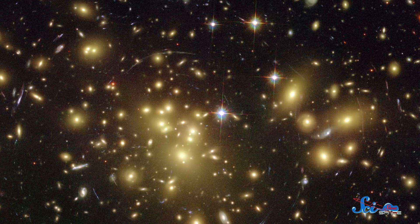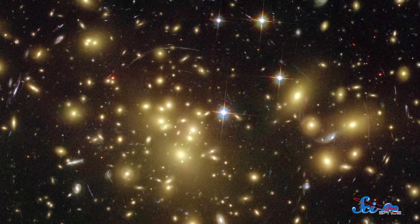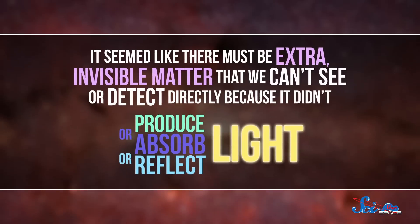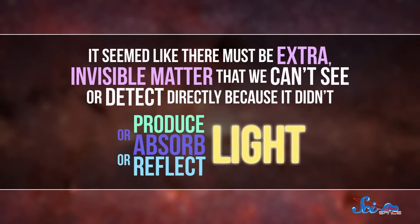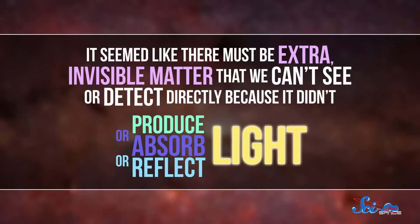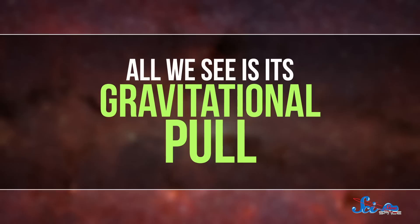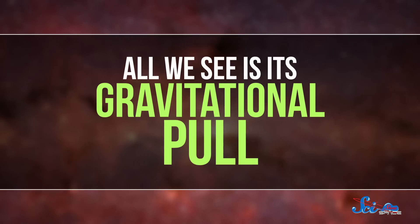Astronomers discovered dark matter back in the 1970s based on the way galaxies moved and rotated. They went way too fast for the gravity from the stars and gas astronomers saw to be the only thing keeping those galaxies from flying apart. It seemed like there must be extra invisible matter that we can't see or detect directly because it didn't produce or absorb or reflect light. All we see is its gravitational pull.